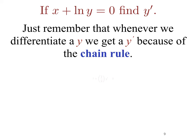Differentiating the first term x we get 1, plus the derivative of the natural log of y. We see a y is inside so that'll give us the y prime term, and then the derivative of natural log of anything is 1 over that entity, so we get the 1 over y term. Finally, on the right hand side, the derivative of 0 is 0.